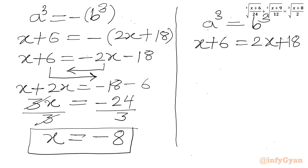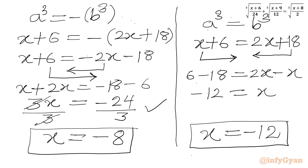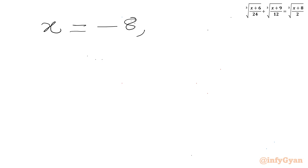Now I will consider the second equation, A³ equals B³, so x+6 equals 2x+18. Taking x to the right side and 18 to the left: 6 minus 18 equals 2x minus x, so minus 12 equals x. Our second real solution is x equal to negative 12. Our final answer is x equals negative 8 and x equals negative 12.